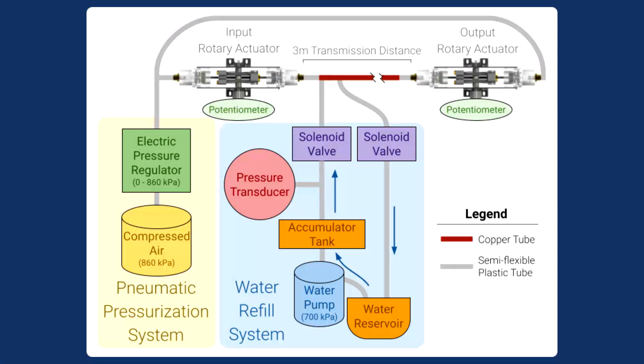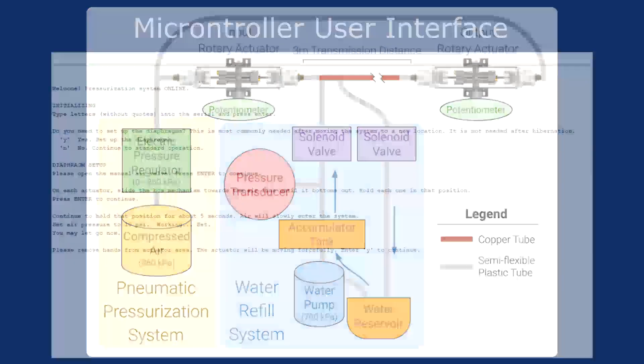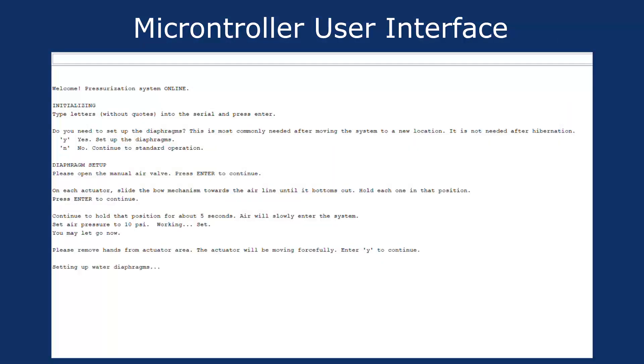Operators set up and adjust the system through a microcontroller, which regulates the waterline by solenoid valves and the airline by an electric pressure regulator. System initialization is automated and instructions are given in plain language.